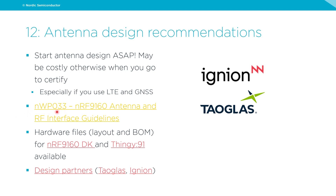We have White Paper 33 available at InfoCenter with more information on antenna and RF interface guidelines. We also provide hardware files — both layout and bill of materials, including Gerber files for the NRF 9160 DK and Thingy 91. Some customers essentially use the Thingy 91 design as much as they can and then create their own PCB to go to market. Check the licensing when downloading the hardware files, but it should be possible to use them as a guideline for your own designs.